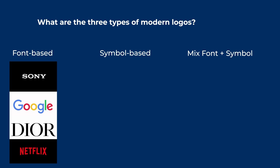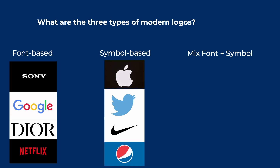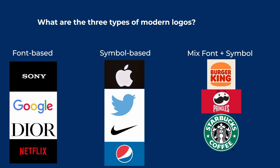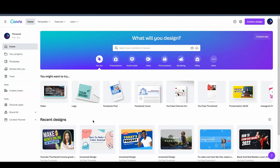The second type is symbol-based logos, created using a symbol or icon. Examples include Apple, Twitter, Nike, and Pepsi. These are usually more difficult to create because they require a professional graphic designer, but I'll show you how to create one from scratch using Canva. The third type is a mix of both — examples include Burger King, Pringles, and Starbucks, where they incorporate the company name inside the symbol. I'll show you how to do something similar on Canva.